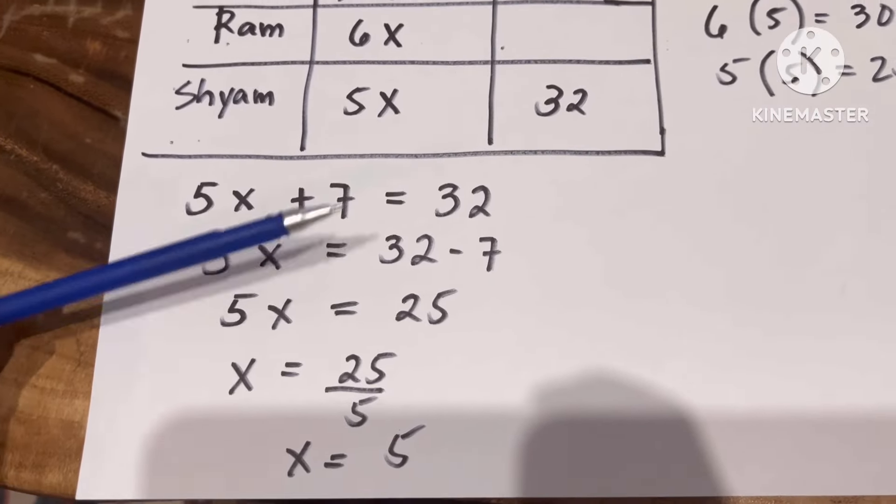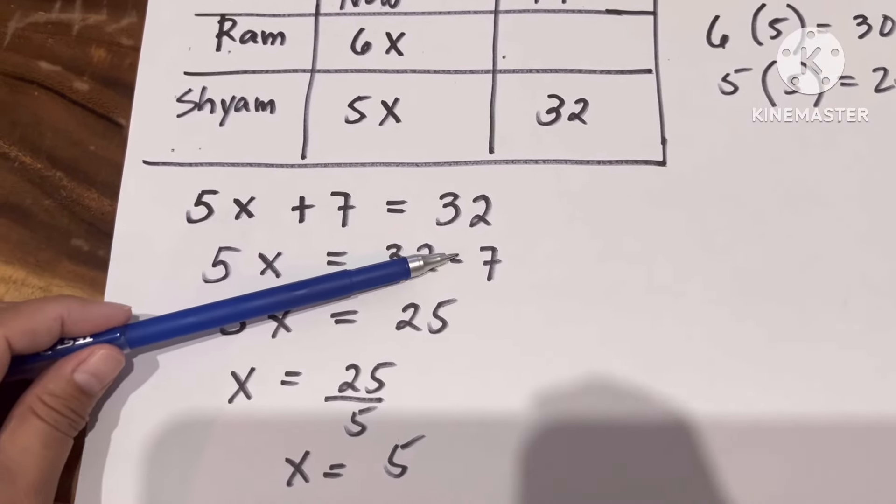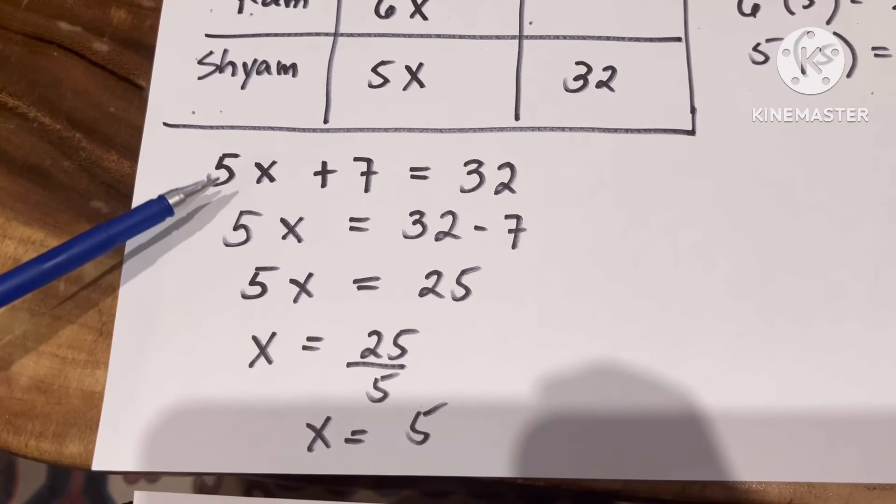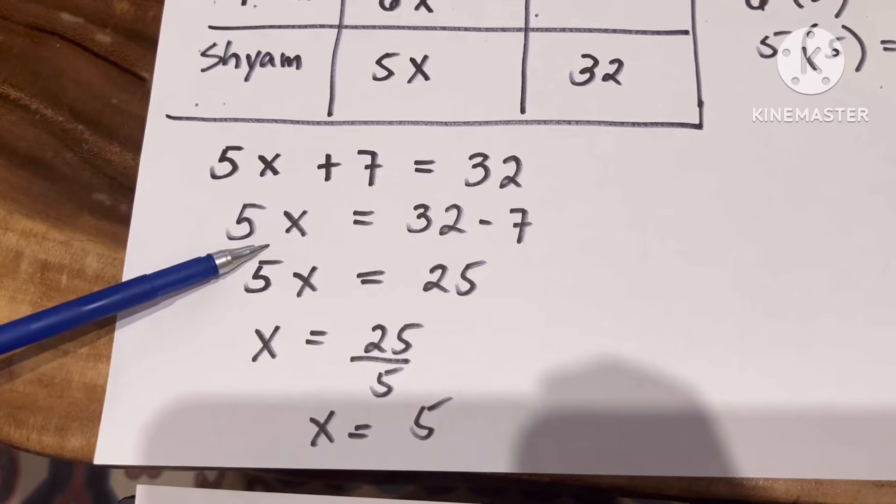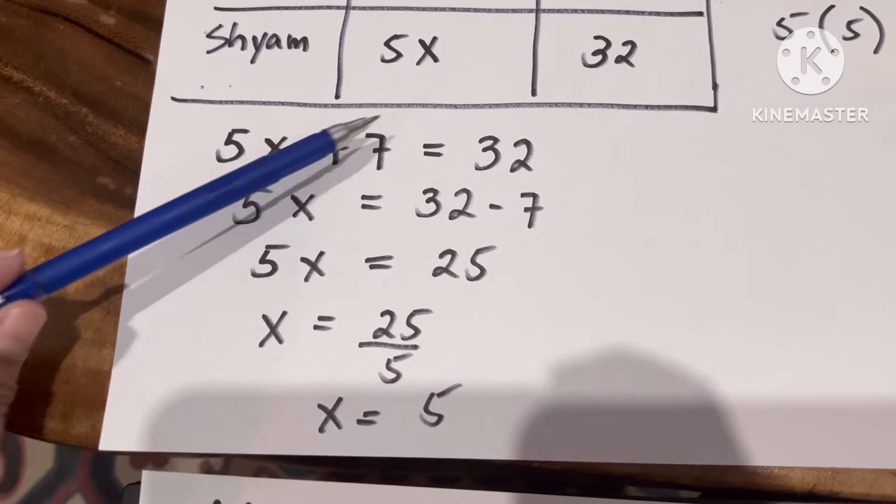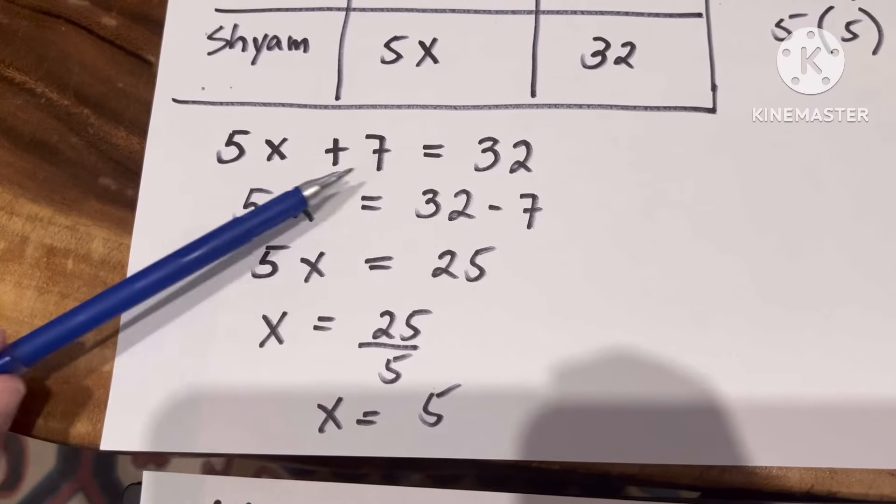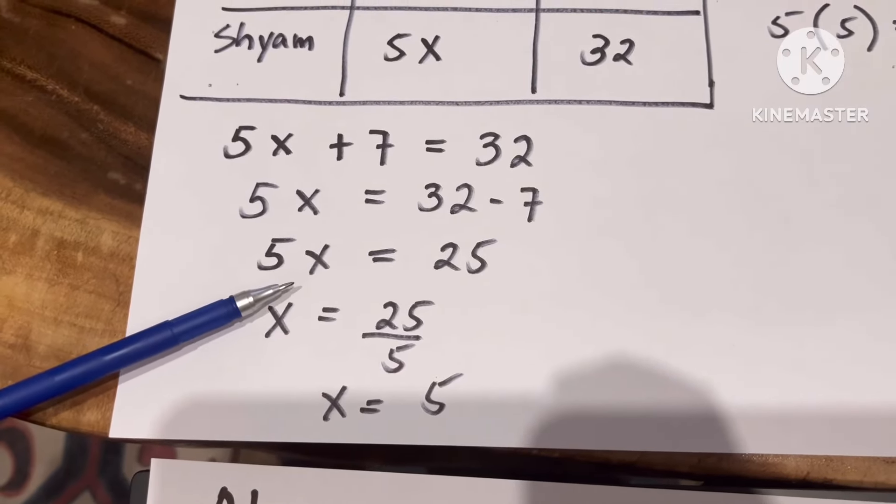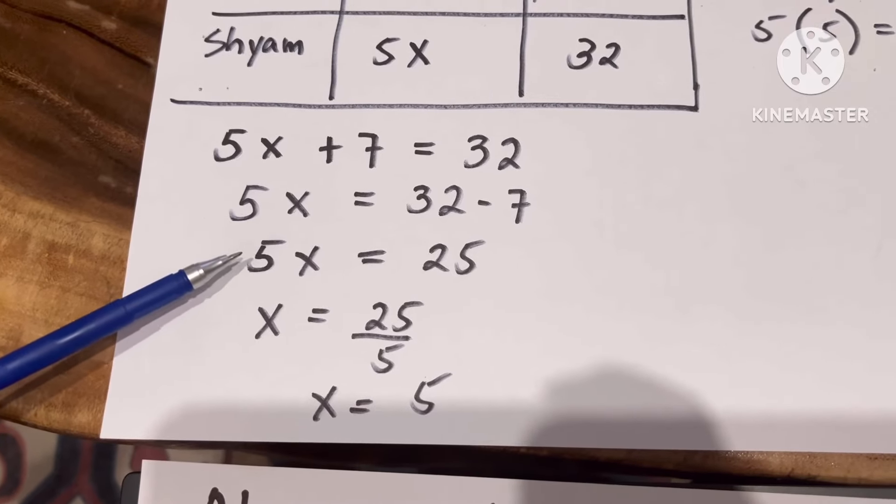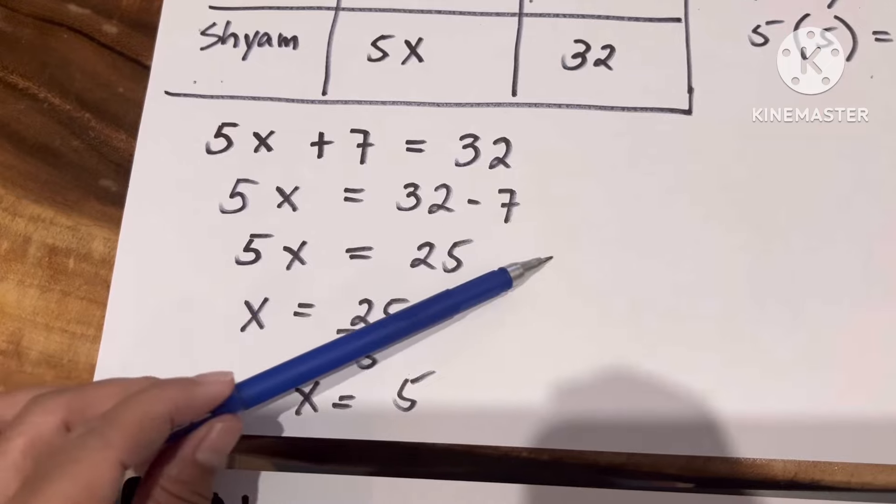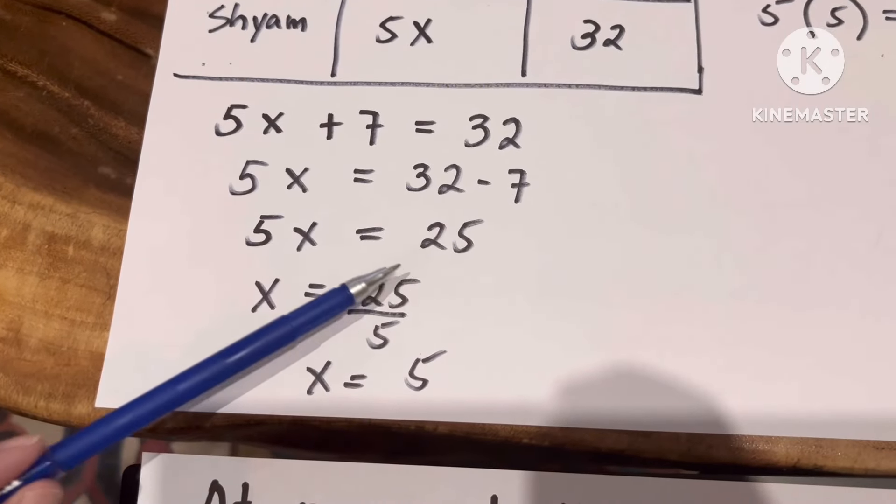5X plus 7 equals 32. So let's get the value of X. We bring down 5X here, and then we transpose positive 7 to the other side of the equation, so positive will become negative. What will happen is it will become 5X equals 32 minus 7 equals 25.